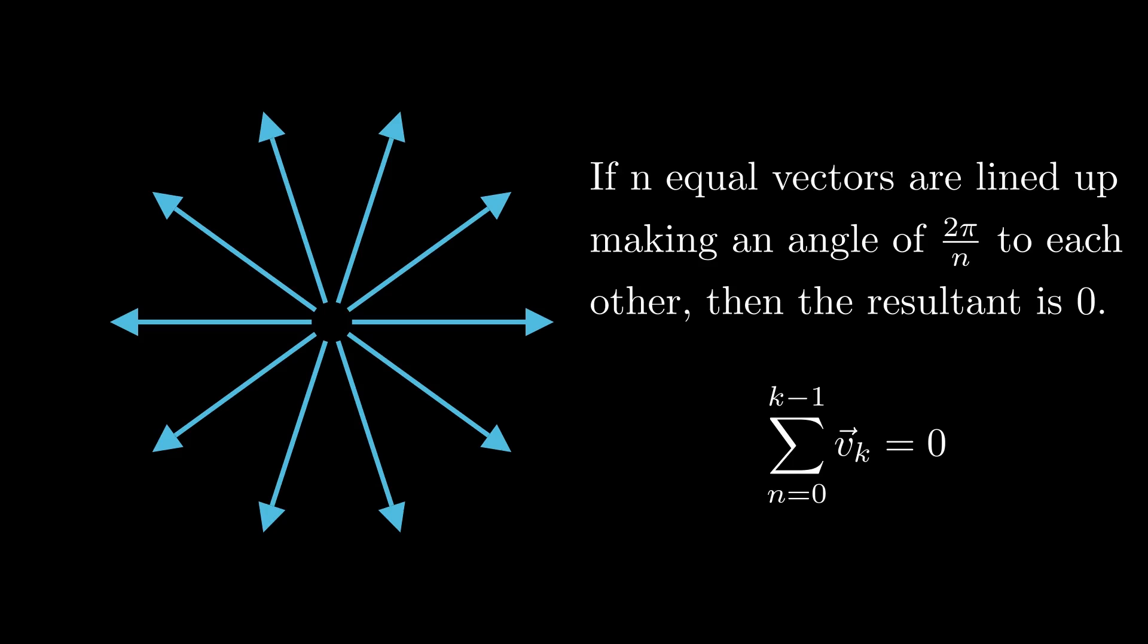However, for mathematicians, simply stating that symmetry makes it so isn't quite enough. There's a beautiful and rigorous mathematical proof for this phenomenon that applies to any number of vectors n, which can be elegantly demonstrated using Euler's formula, which we will explain in detail in our next video.